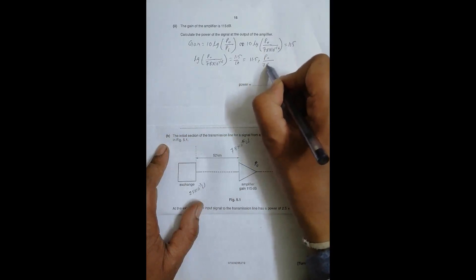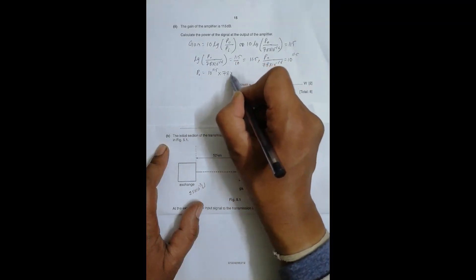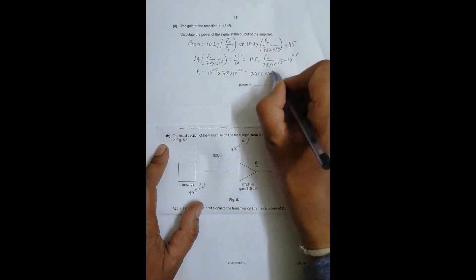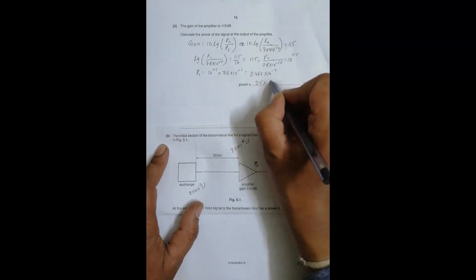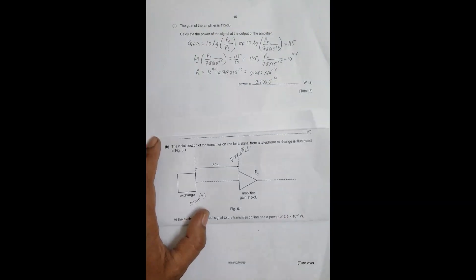This gives us P_0 equals 10^11.5 times 7.8 × 10^-6, which ultimately equals 2.466 × 10^-4, so this becomes 2.5 × 10^-4 watts. So attenuation and gain have the same formula. The only difference is that the initial will be more in case of attenuation, but in case of gain, the initial will be less and final will be more.